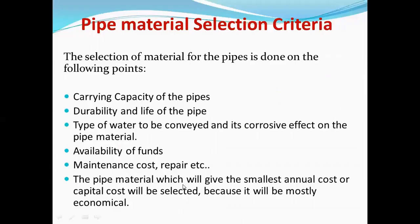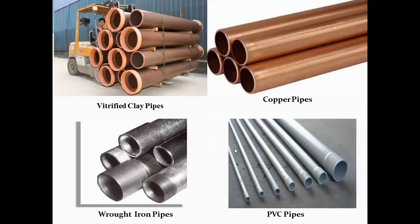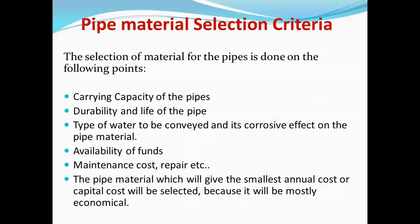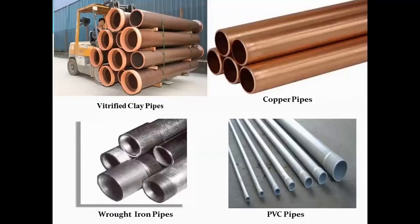Third is the type of water to be conveyed and its corrosive effect on the pipe material. If the water is somewhat corrosive in nature, then we should avoid using metallic pipes like copper, wrought iron, steel, or cast iron. Instead, we should prefer concrete pipe, vitrified clay pipe, or PVC pipe.